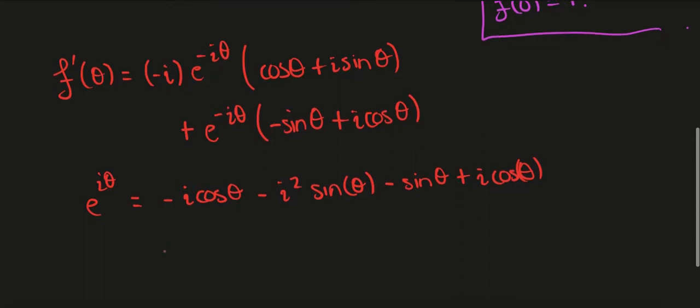Okay, so what does this give? Well minus i cos theta will cancel with this cos theta, and i squared is minus 1, so this will give us sine theta, and that will cancel with this minus sine theta.